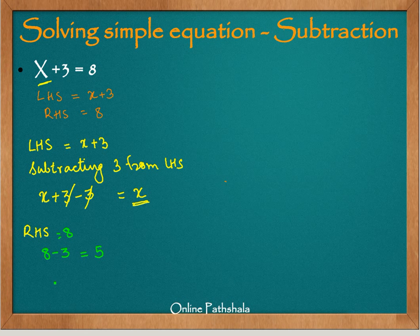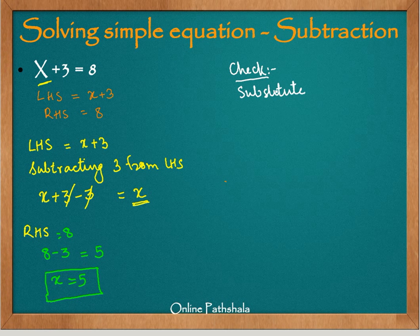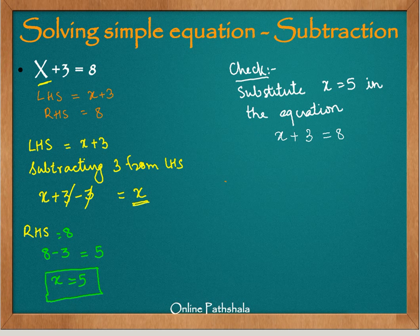Therefore the new equation we get is x equals 5. This is the solution of this simple equation. To check whether the solution is correct, we substitute x equals 5 in the original equation. So x plus 3 equals 8 becomes 5 plus 3 equals 8, which evaluates to 8 equals 8, meaning the left hand side equals the right hand side. This is the solution.